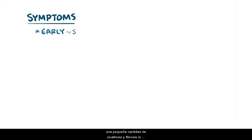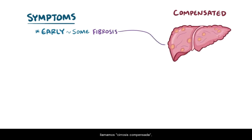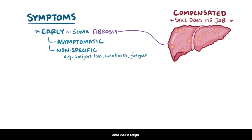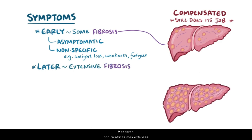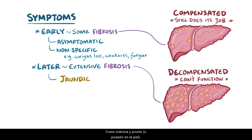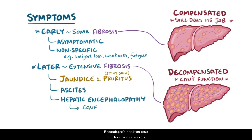To recap the general symptoms of cirrhosis: early on, with a small amount of scarring and fibrosis, we call it compensated cirrhosis, meaning the liver can still do a lot of its job. In this case, someone with cirrhosis might not have any symptoms, or might have nonspecific symptoms like weight loss, weakness, or fatigue. Later on, with extensive scarring, the liver progresses to decompensated cirrhosis and can't function normally. At this point, symptoms like jaundice and pruritus, ascites, hepatic encephalopathy leading to confusion, and easy bruising from low coagulation factors start to develop.